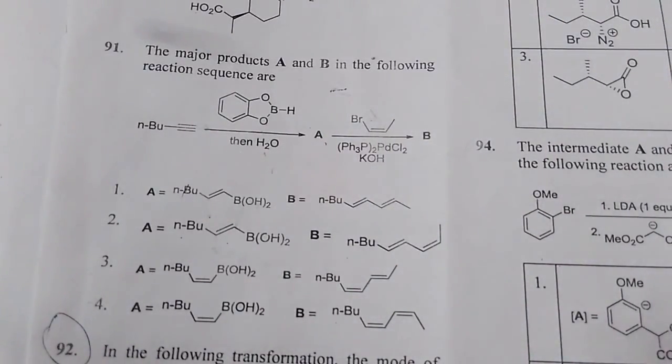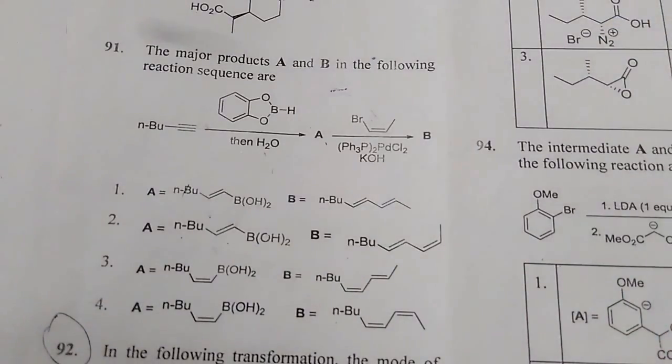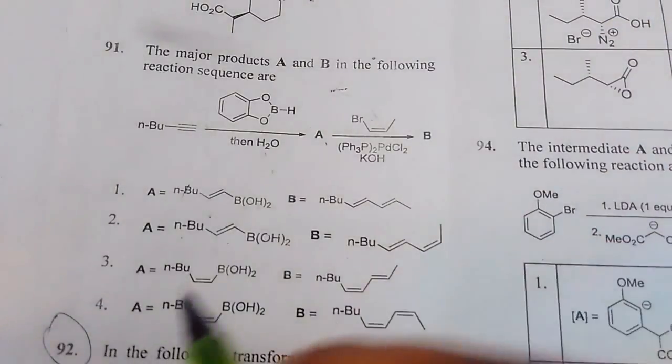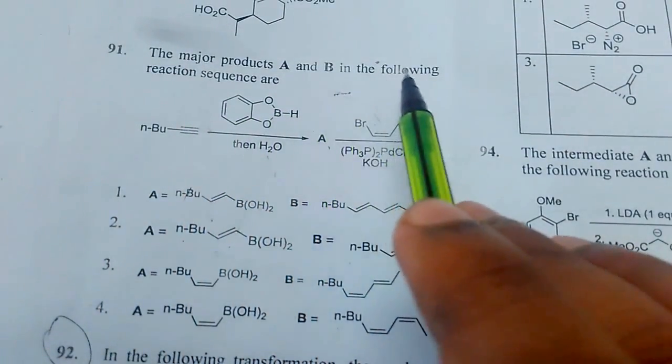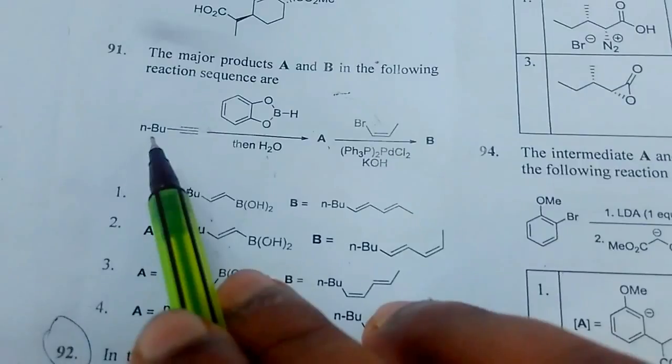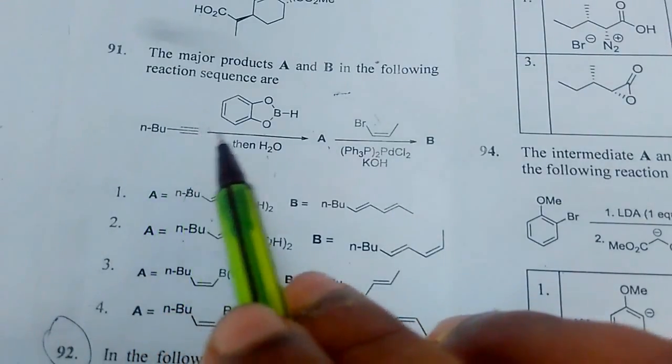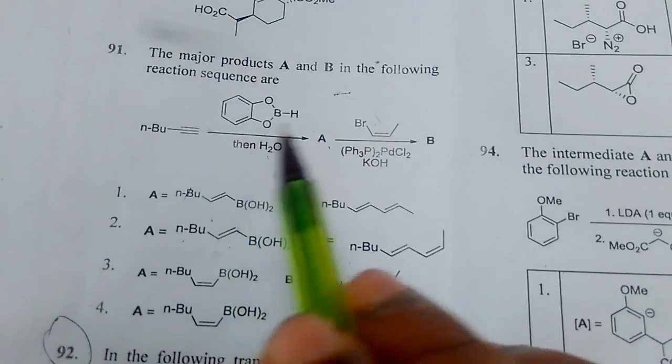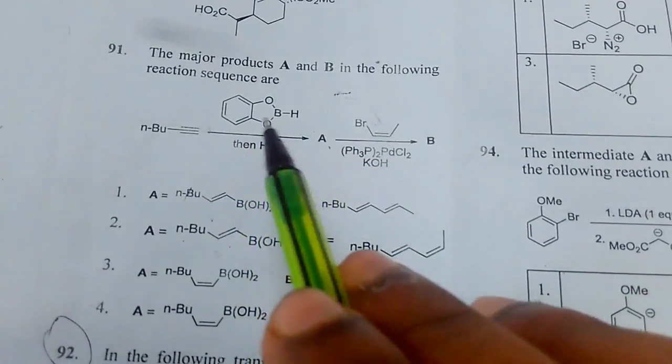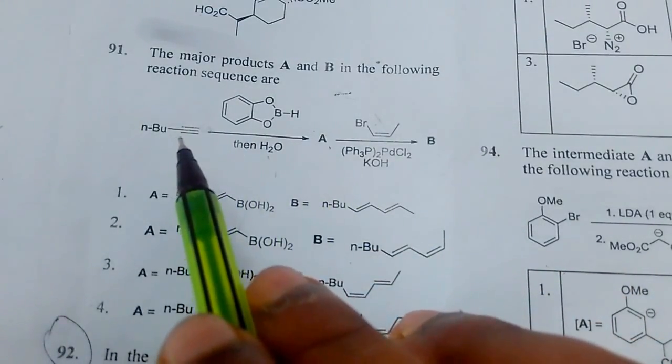Okay, today we are going to look at a question which was asked on the 2017 December exam. The question is on the C part: the major products A and B in the following reaction sequence are N-butyl. Here the reactions are given. You can see there is boron, so a triple bond is here.